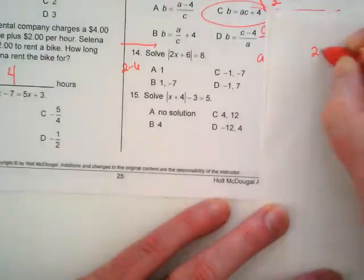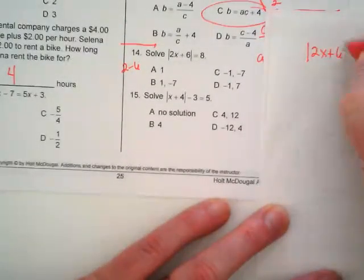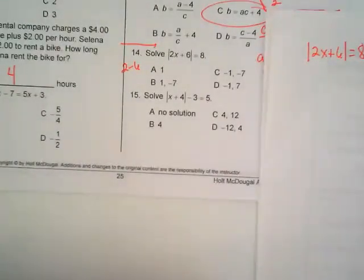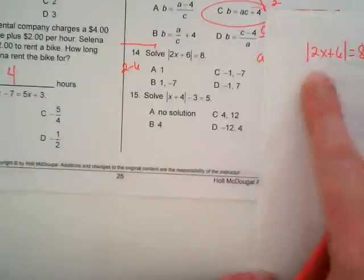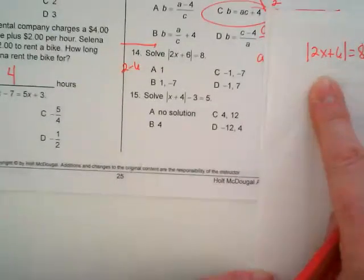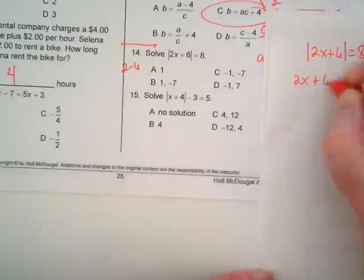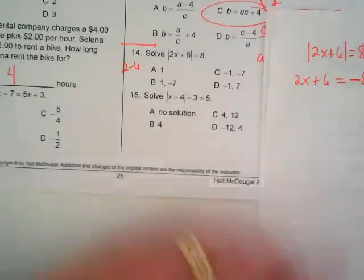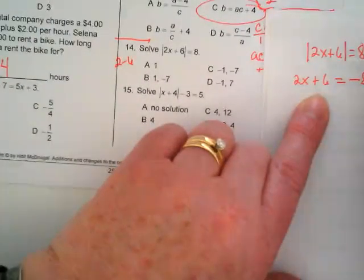So I've got solve the absolute value of 2x plus 6 equals 8. First thing I want to look at is the absolute value isolated on one side of the equation, and it is. There's nothing else with it, I don't have to add, subtract, multiply or divide. That means I'm going to take what's in the absolute value out and have it equal to its negative value and its positive value, so this side doesn't change.